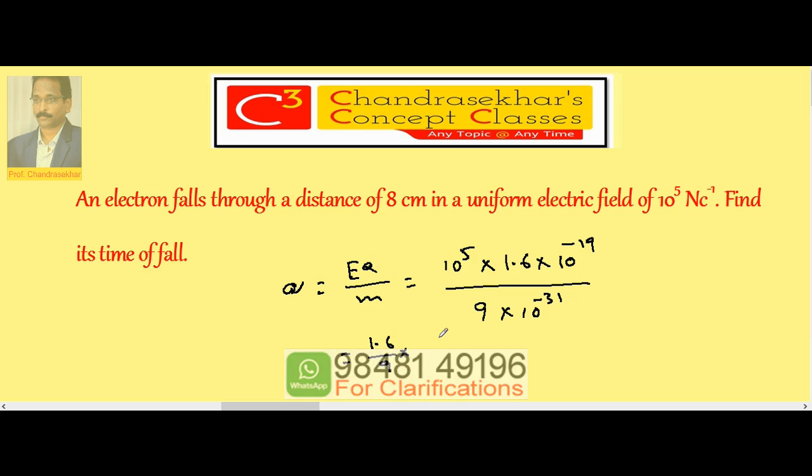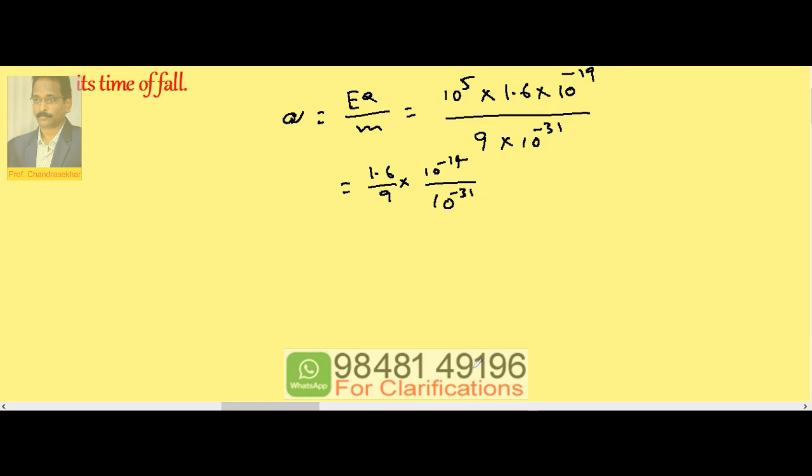So it is 1.6 by 9 times numerator 10 to the power of minus 14, denominator 10 to the power of minus 31. This is equal to 1.6 by 9 times 10 to the power of 17 meter per second square.